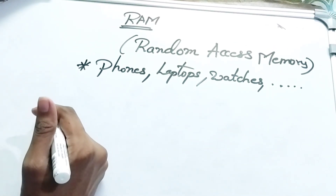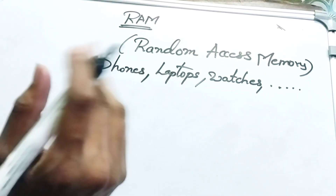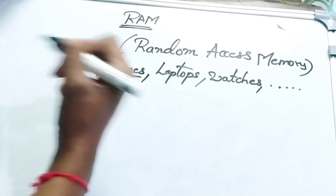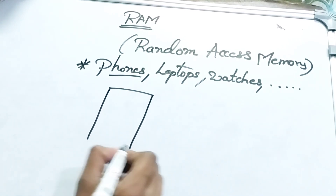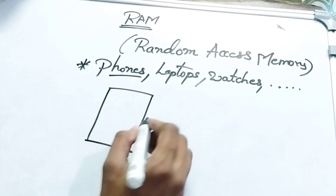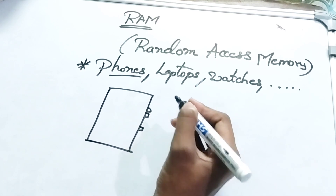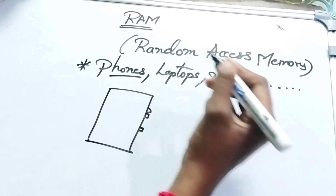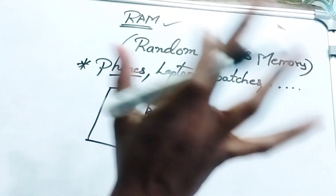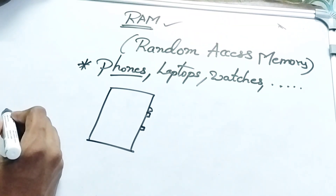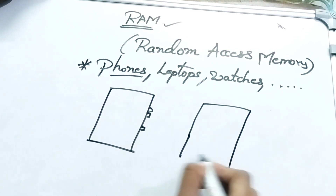We will make things clear in this video. First, if we have a phone and we turn it on, that phone has a processor, camera, RAM, and ROM. We will talk about RAM and ROM in this video.